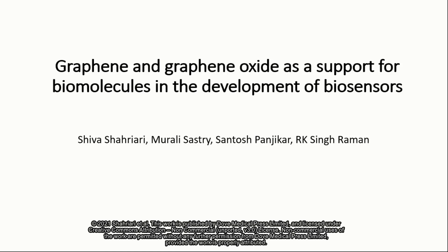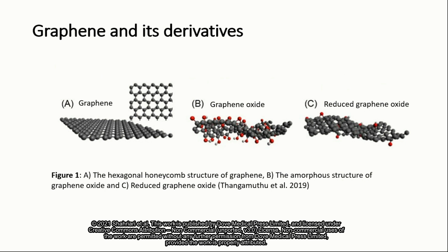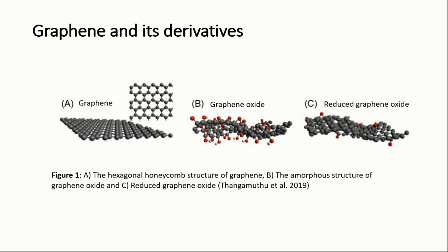In this presentation, the importance of graphene and graphene oxide as a support for immobilization of biomolecules in the development of biosensors will be reviewed. Graphene is a hexagonal lattice of carbon with a thickness of only one atom, which has a variety of superior properties such as large surface area, high thermal and electrical conductivity, and perfect mechanical strength.